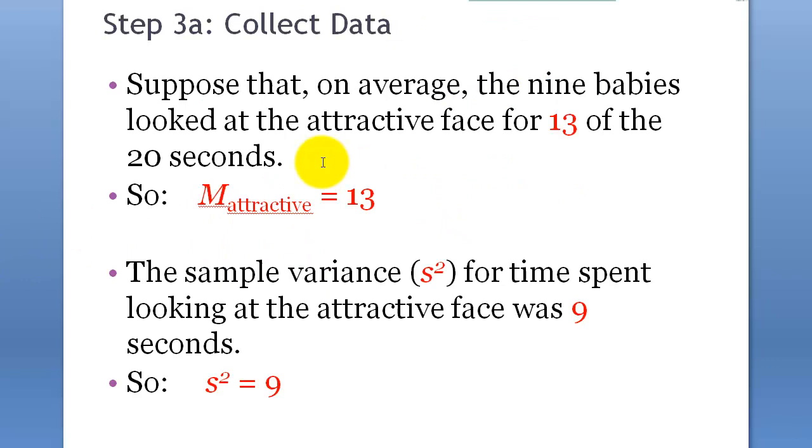Okay. First of all, mean attractive equals to 13. Suppose that on average, the nine babies look at the attractive phase for 13 seconds of the 20 seconds. So, the sample mean would be, based on the experiment, 13.